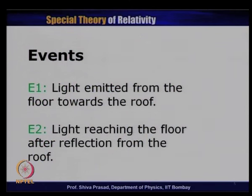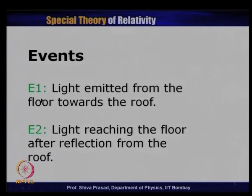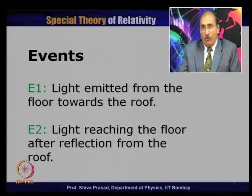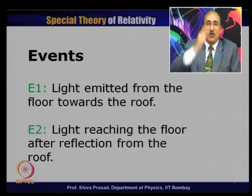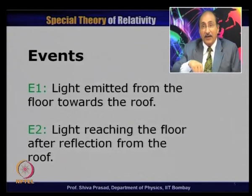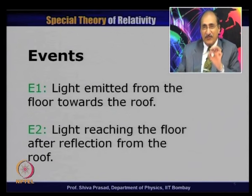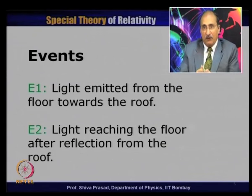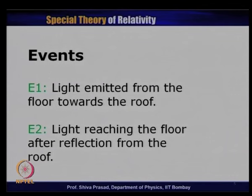Let us define our events. Event 1 (E1) is light emitted from the floor of the compartment towards the roof. Event 2 (E2) is light reaching the floor after reflection from the roof. So event 1 is the light being thrown upward, and event 2 is when it comes back and is received at the floor.